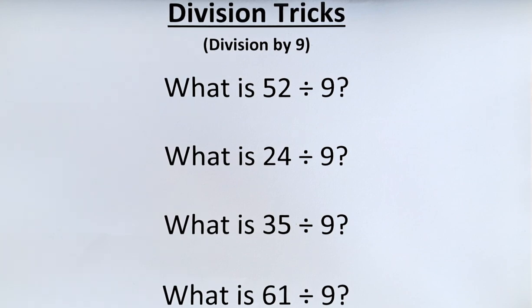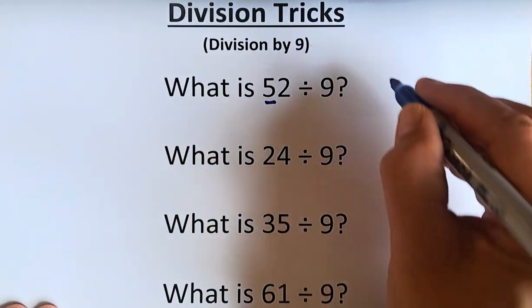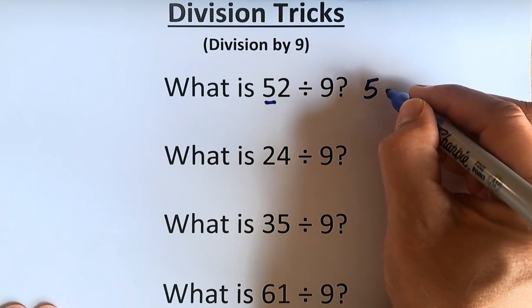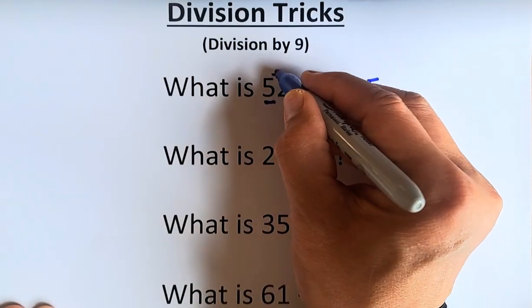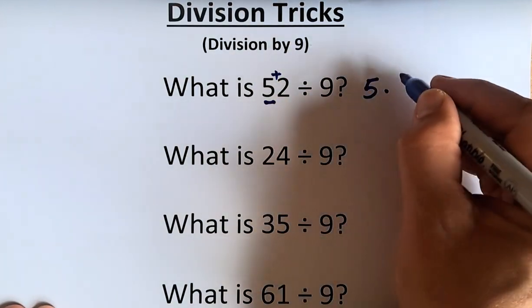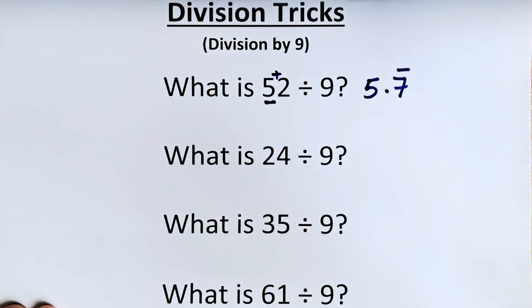So what is 52 divided by 9? The first digit, 52 is 5, so we leave it as 5. And then to get the decimal point, very simple. You're going to add 5 plus 2 and that will give you 7. It's going to be 5.7 recurring.